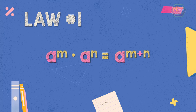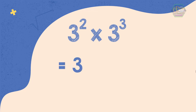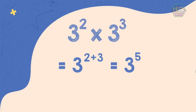For example, the equation 3 raised to the power of 2 times 3 raised to the power of 3 is equal to 3 raised to the power of 2 plus 3. Then the equation will become 3 raised to the power of 5, which means that 3 will be multiplied 5 times and it will give us a result of 243.